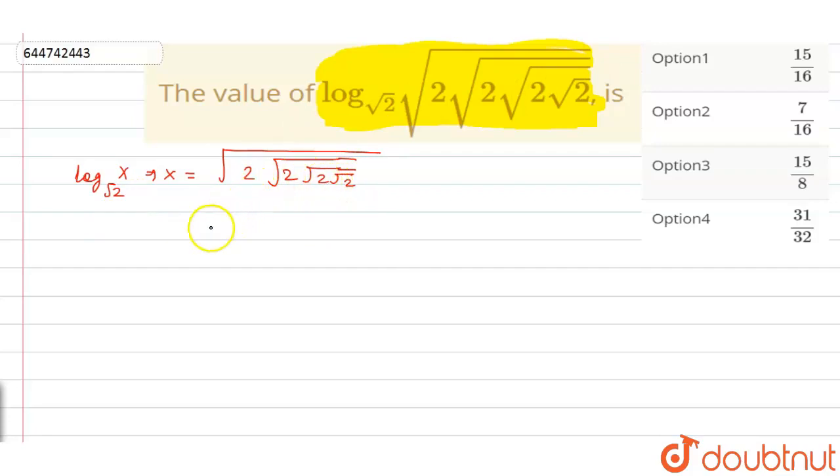We can write the value of x if we start from evaluating the value from the right corner, and this will become 2 to the power 1 by 2 into 2 whole to the power 1 by 2. We can write this as 2 to the power 3 by 2 into 1 by 2.